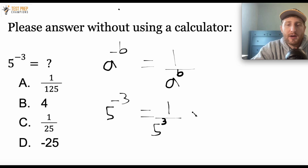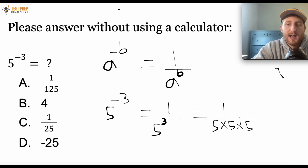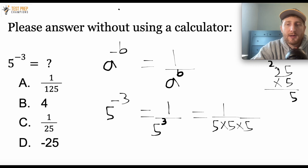So how do we finish this out? Well, 5 raised to the positive 3 is the same as 5 times 5 times 5. I know that 5 times 5 is 25, and then times another 5. I could write it like this: 5 times 5 is 25, put the 5 down, carry the 2, then 5 times 2 is 10 plus 2 is 12. So the answer is 1 over 125.